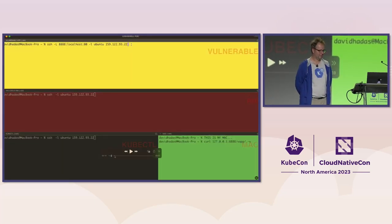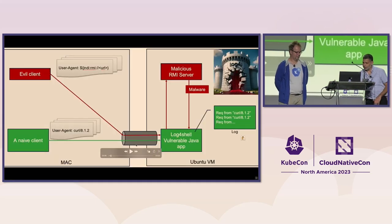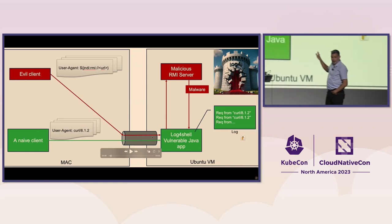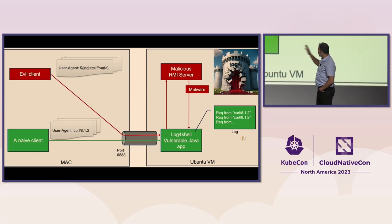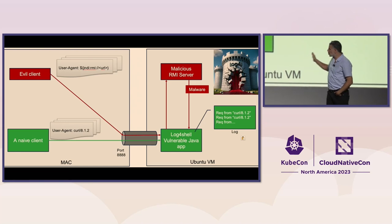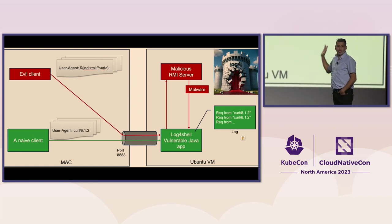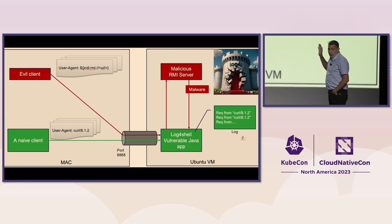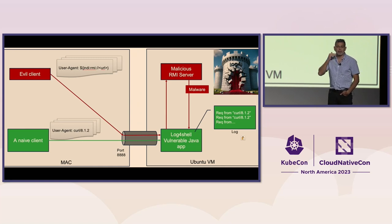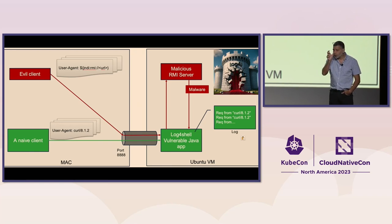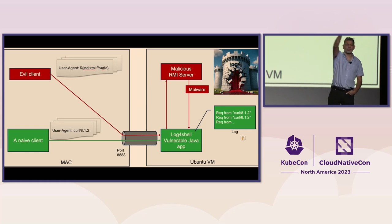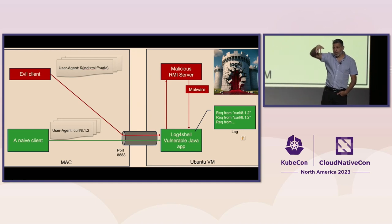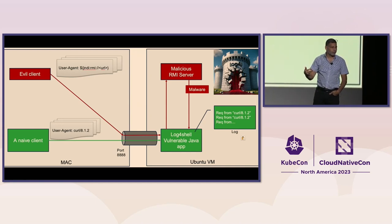In the demo, we have naive clients sending to a vulnerable application. That vulnerable application logs the user agent. Our attacker sets up an RMI server somewhere, then sends an exploit through a malicious client that has a certain string in the user agent. This tells the vulnerable app to go to the malicious server, fetch some malware, and execute it.